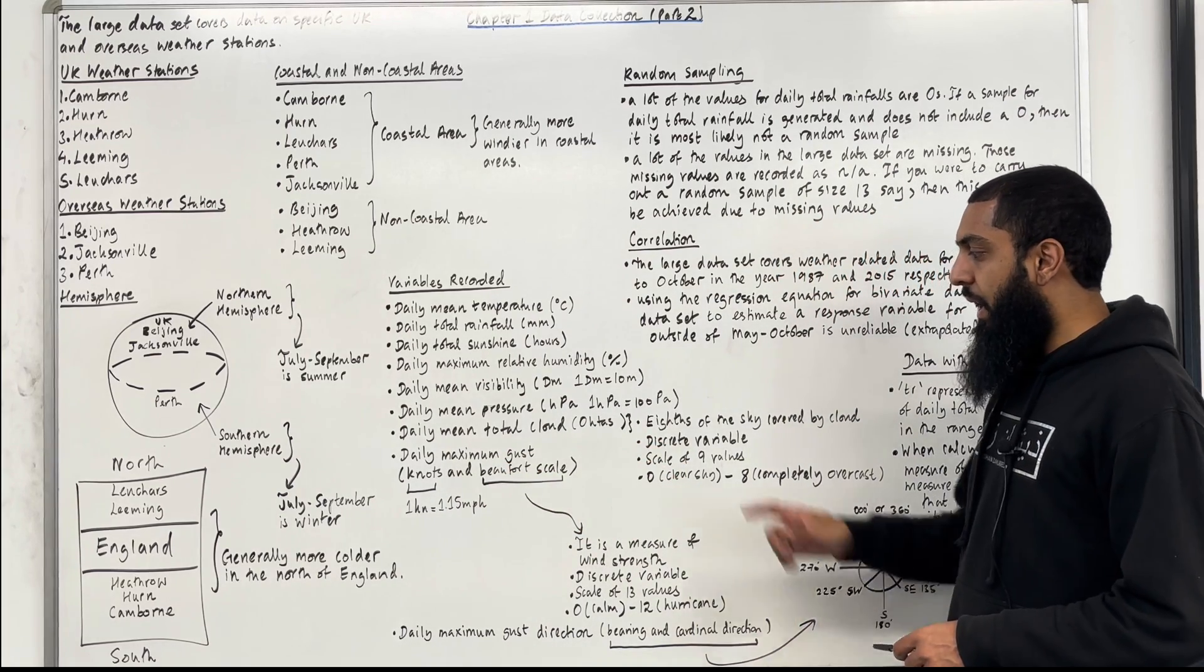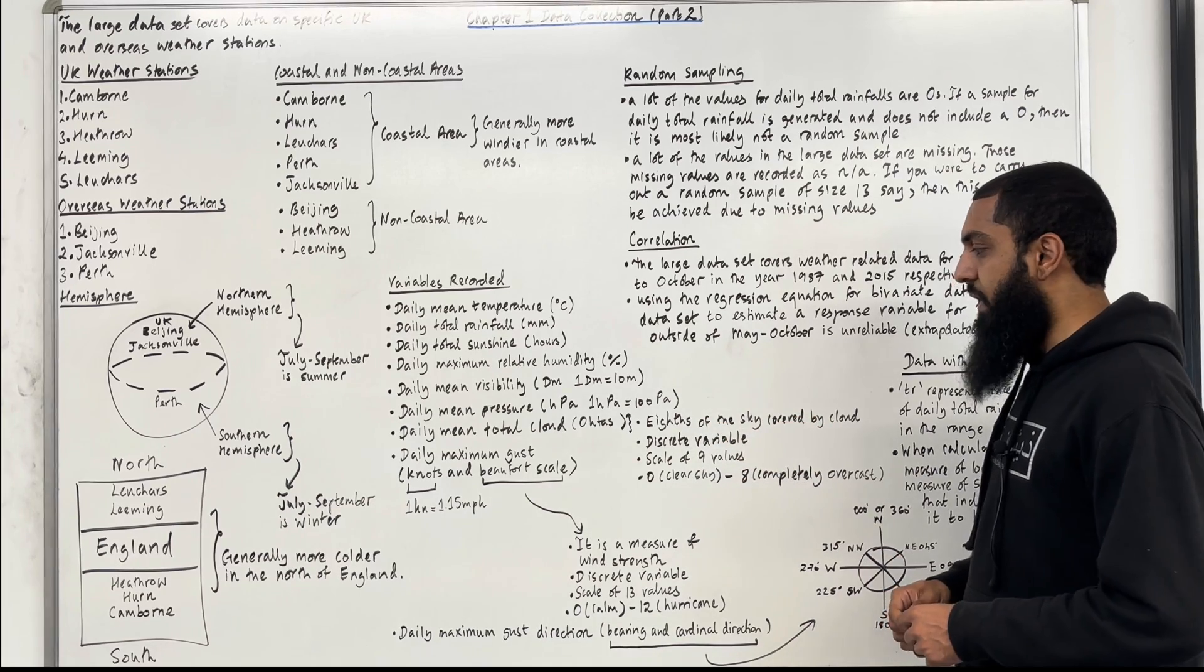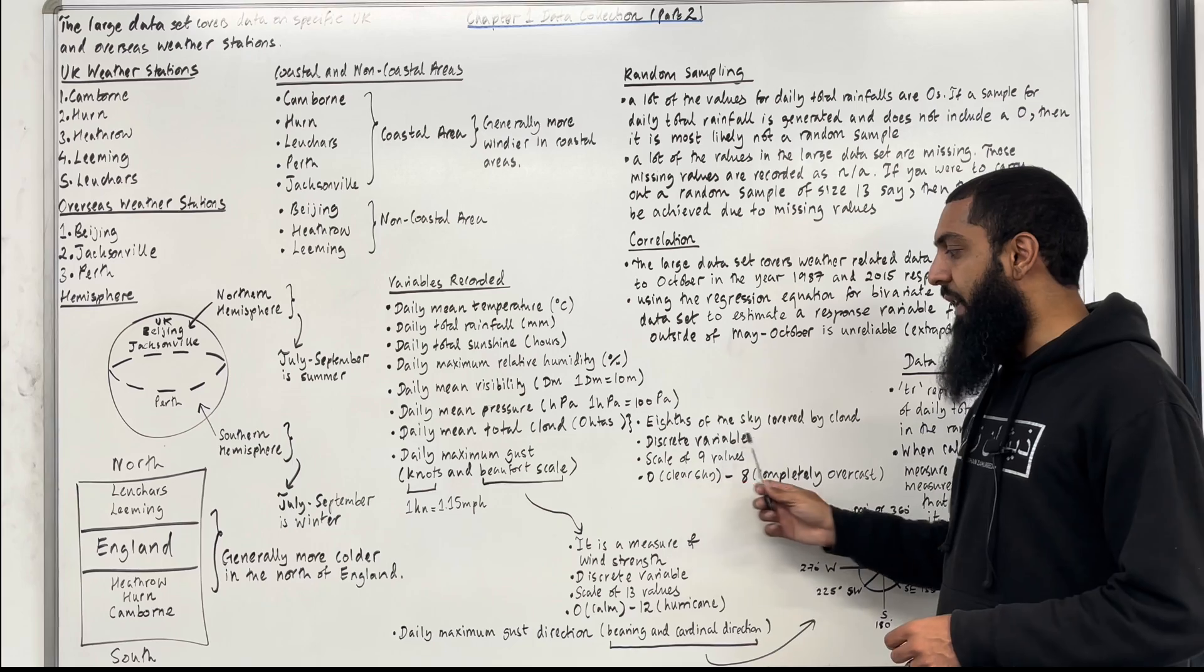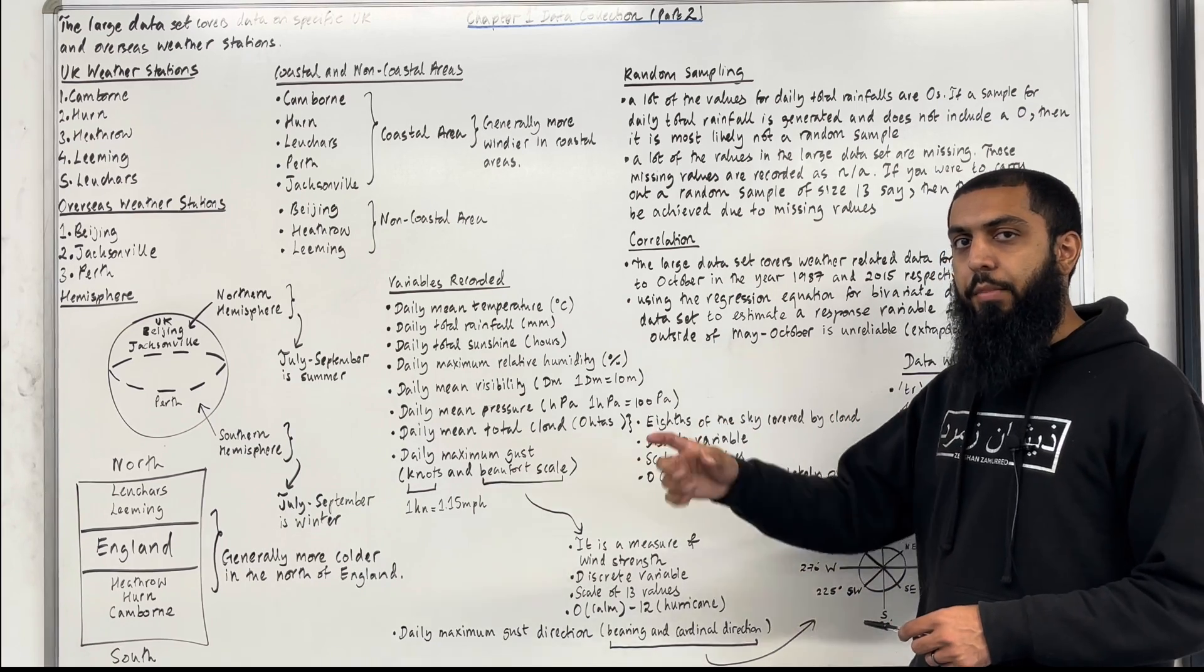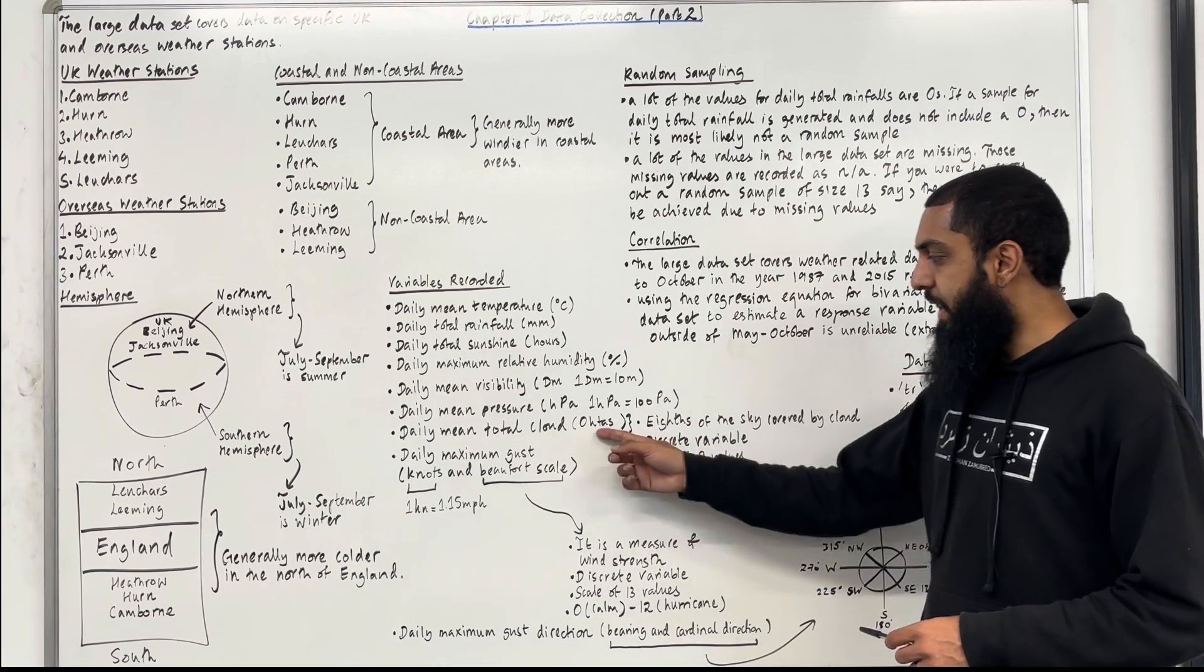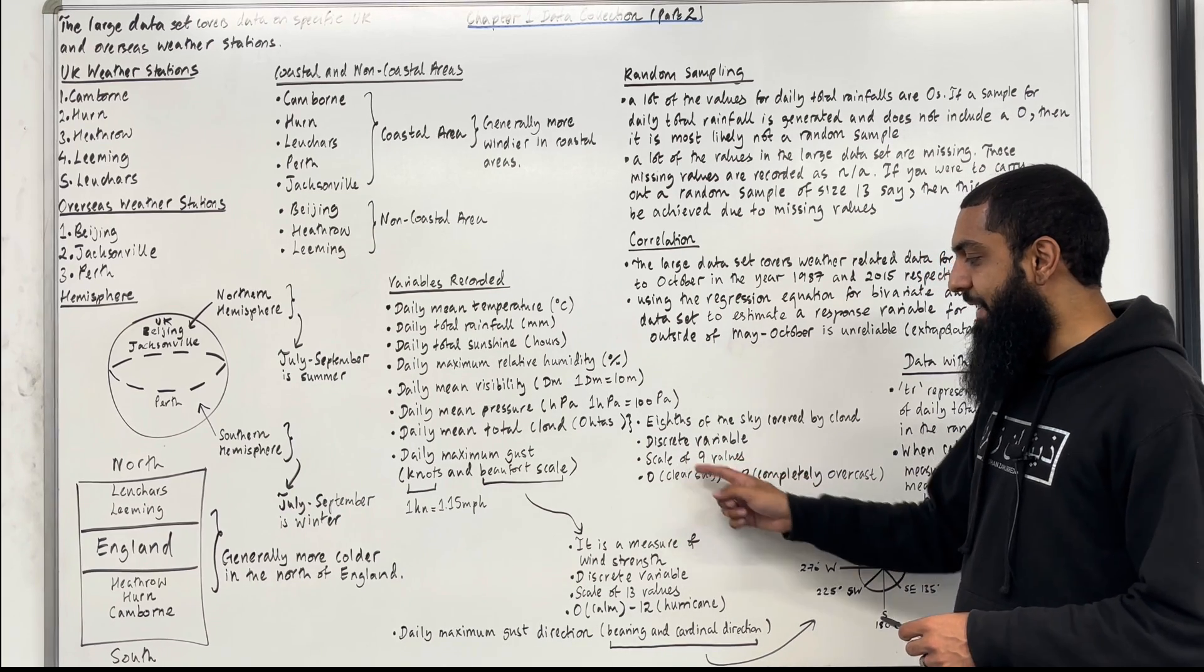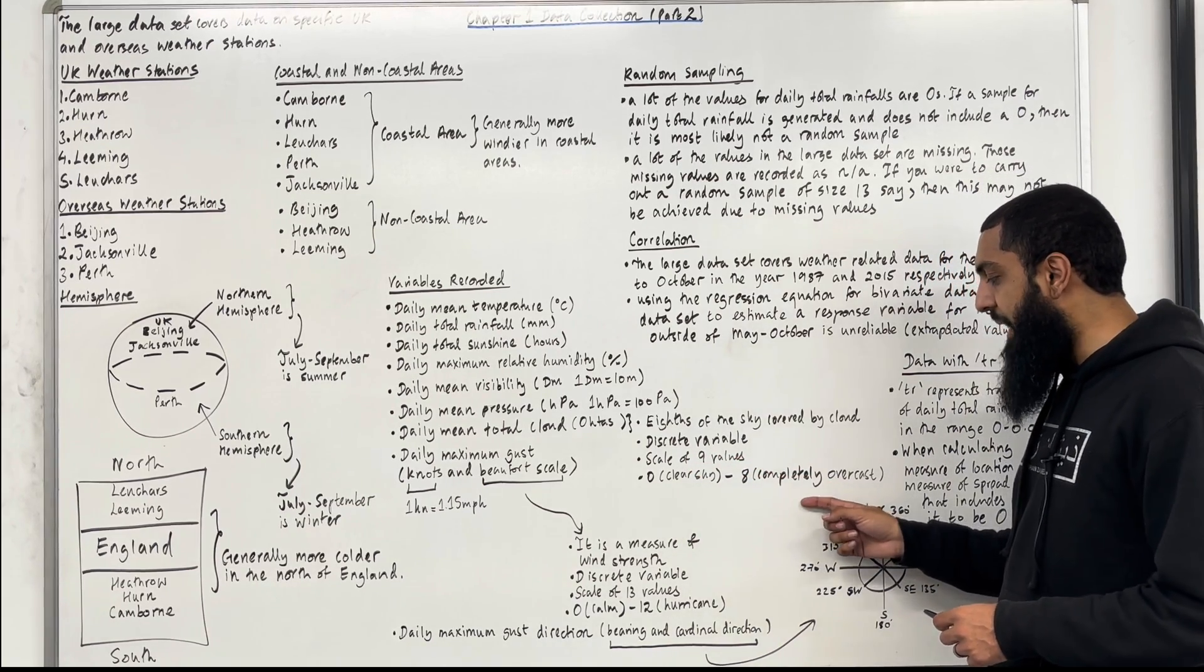Oktas represents eighths of the sky covered by cloud. Oktas is a discrete variable. This means that it takes finite number of values. Oktas represents a scale of 9 values. Zero represents clear sky, eight represents completely overcast.